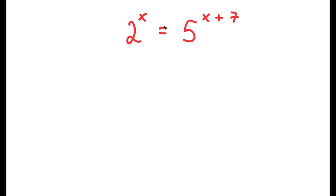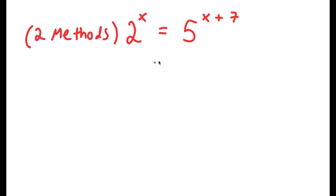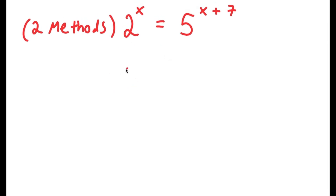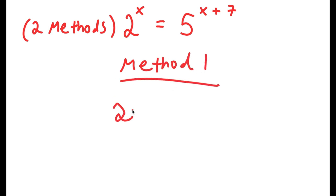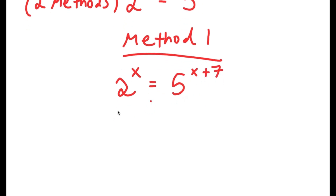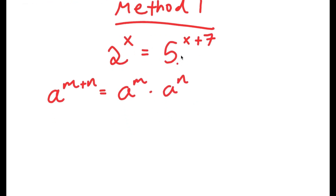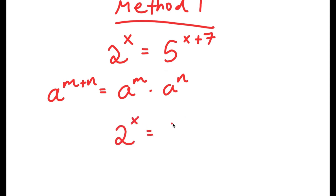So in this problem, I have 2 to the power of x is equal to 5 to the power of x plus 7. I have 2 methods to solve this problem — make sure to stick around for the video to see both. For method 1, I'm going to write the problem: 2 to the power of x is equal to 5 to the power of x plus 7. Using the property that a to the power of m plus n equals a to the power of m times a to the power of n, I can write 5 to the power of x plus 7 as 5 to the power of x times 5 to the power of 7.